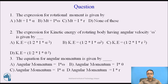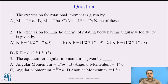Now pause the video and answer this question. The answers are: the rotational moment is given by I into alpha, where alpha is the angular acceleration. The expression for kinetic energy for a rotating body having angular velocity omega is given by half into I omega squared — so option B is the correct answer. The equation for angular momentum is given by I into omega — so option A is the correct answer.